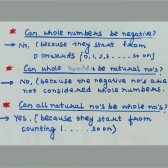Now some questions based on whole numbers and natural numbers. Question 1: Can whole numbers be negative? No. Whole numbers cannot be negative — they are only the positive ones. The reason is that they start from 0 onwards and include only positive values.